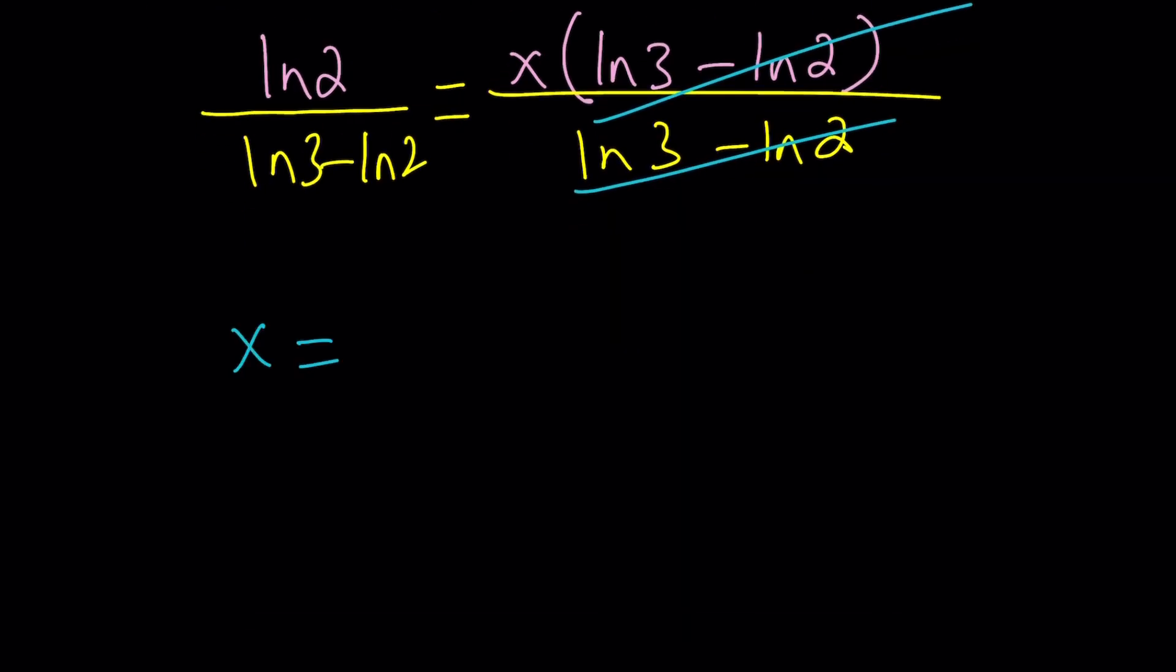So let's go ahead and divide both sides by ln 3 - ln 2. And we should be good to go. Now, ln 3 - ln 2, obviously, is not 0 because 2 and 3 are not equal. Come on, you knew that, right? And then, we can basically go ahead and cancel that out, and x becomes this.